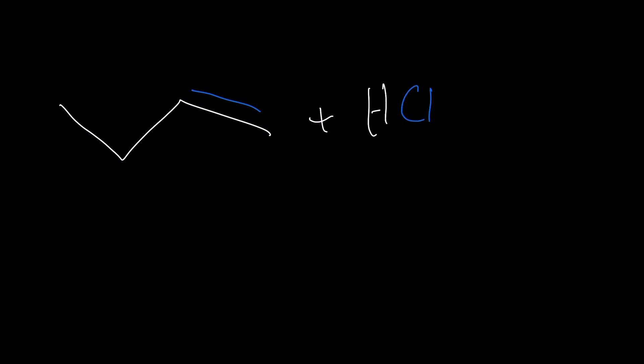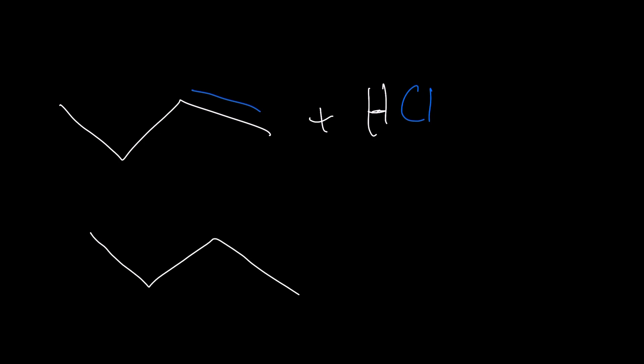Go ahead and try this example. In this example, we have more hydrogens on the right side, so the hydrogen is going to go on that side and the chlorine is going to go on the left carbon. So we're going to get this as our answer.